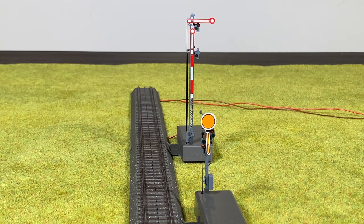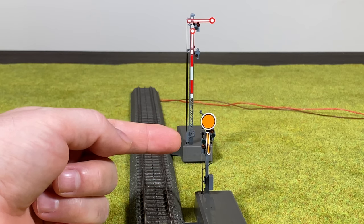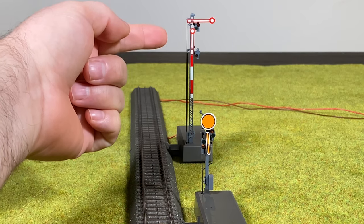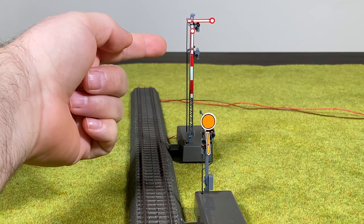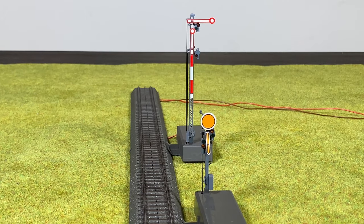Here I got two signals. I got a distant signal here, a distant semaphore signal and a home semaphore signal behind it with three aspects.